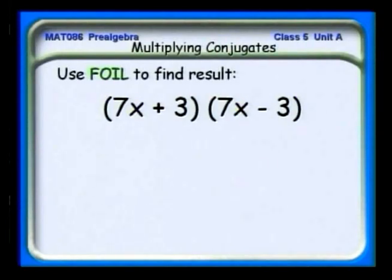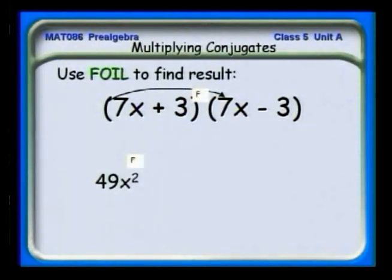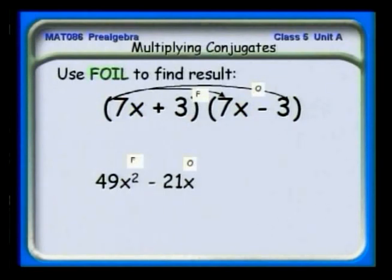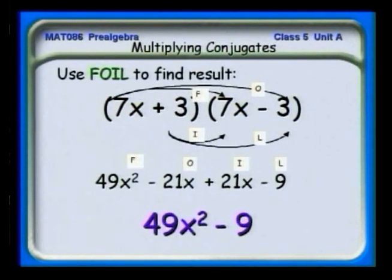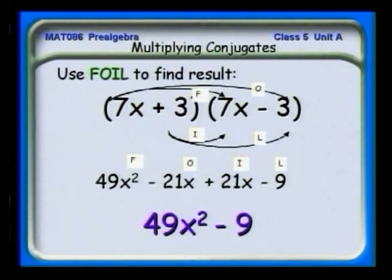Let's use the FOIL method to investigate (7x + 3)(7x − 3). Multiplying the first terms gives 49x squared. Multiplying the outer terms gives −21x. Multiplying the inner term gives +21x. Multiplying the last term: (+3)(−3) = −9. When we go to combine terms, something very interesting happens — the middle terms cancel. We have −21x and +21x, so the middle term disappears, and we're left with the square of the first minus the square of the second term.